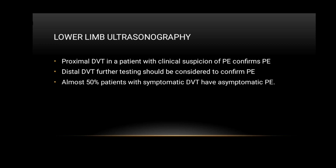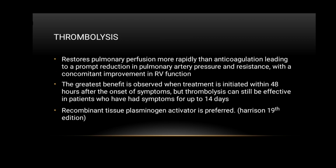Thrombolysis restores pulmonary perfusion more rapidly than anticoagulation, leading to a prompt reduction in pulmonary artery pressure and resistance, with concomitant improvement in right ventricular function. The greatest benefit is observed when treatment is initiated within 48 hours of symptom onset, but thrombolysis can still be effective in patients who have had symptoms for up to 14 days. Recombinant tissue plasminogen activator is the preferred agent.